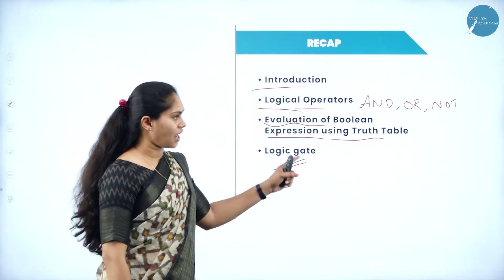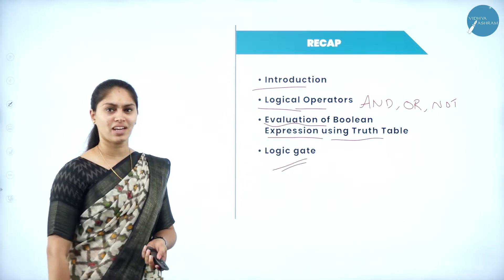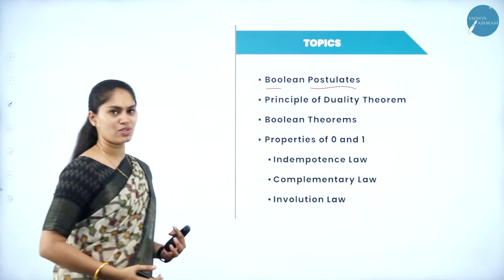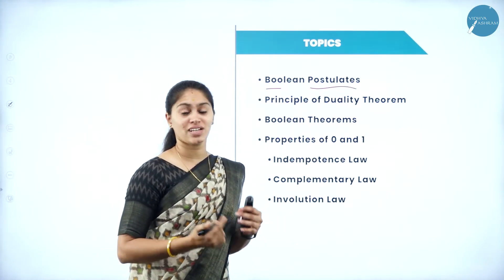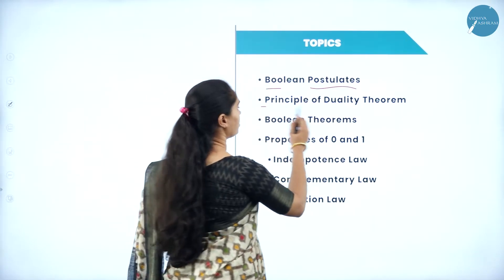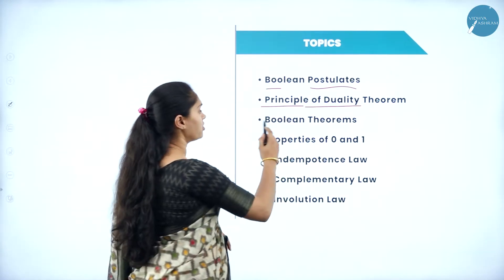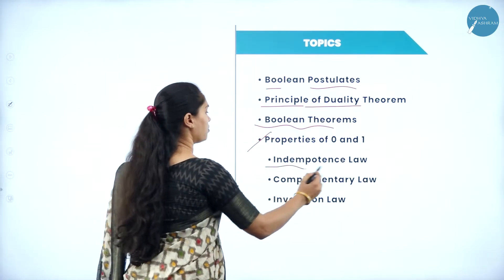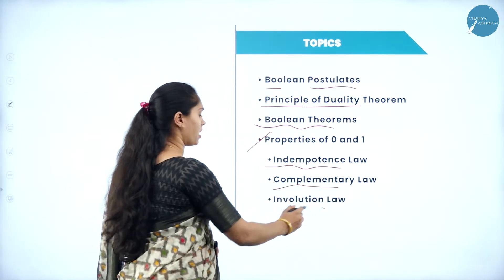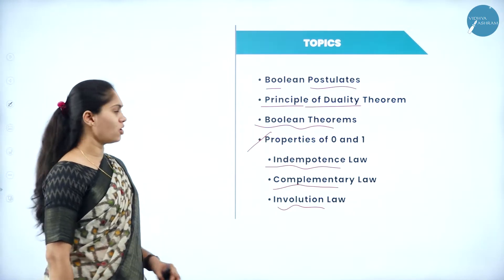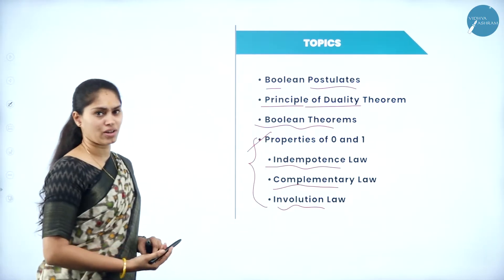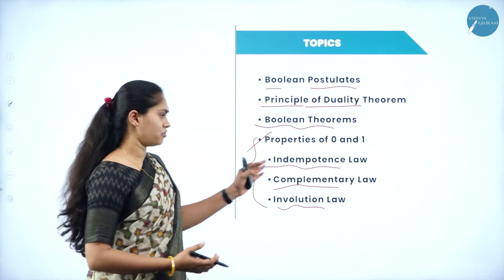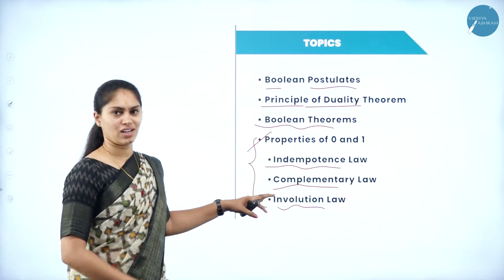We covered AND gate, OR gate, and NOT gate, and learned about their working procedure. In today's session, let me continue with Boolean postulates — the rules and regulations we are supposed to follow in Boolean algebra. We are also going to learn about the principle of duality theorem and some important Boolean theorems, which consist of properties of zeros and ones, idempotence law, complementary law, and involution law. All these laws are very important and will be helpful to get complete marks from this chapter — either for definitions or for proofs.